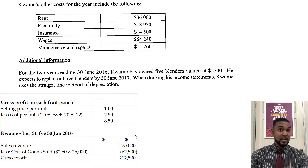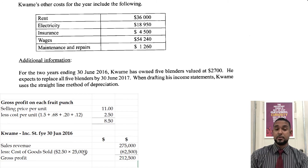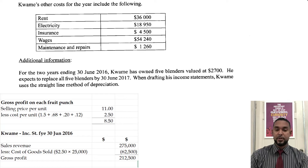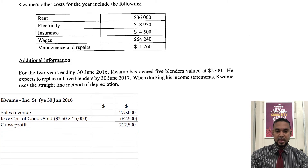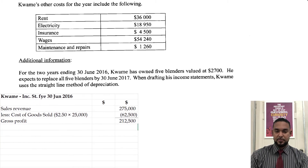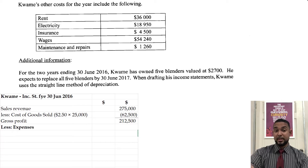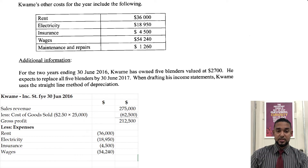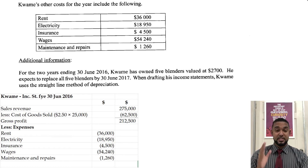You can double-check that by calculating $8.50 gross profit per unit multiplied by 25,000 — you should get back $212,500. So we have that piece of the income statement so far. We need the expenses. Just plug in those five expenses: rent, electricity, insurance, wages, and maintenance and repairs. The last thing we have to do is depreciation, and that is where most people had trouble.